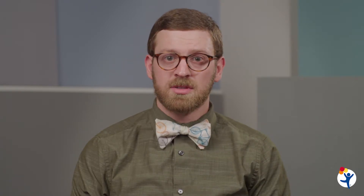Cell-free DNA is used to determine if a woman is at an increased risk to have a pregnancy with trisomy 21, or Down syndrome, trisomy 18, trisomy 13, or changes in the number of sex chromosomes, including Turner syndrome or Klinefelter syndrome.